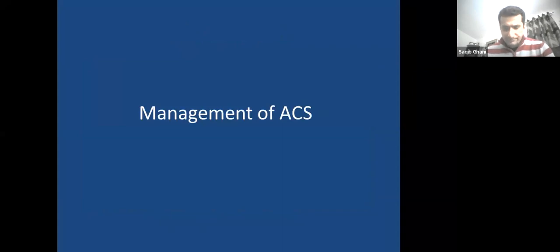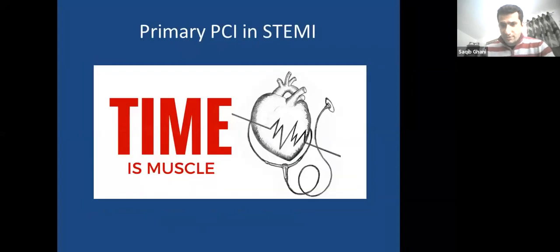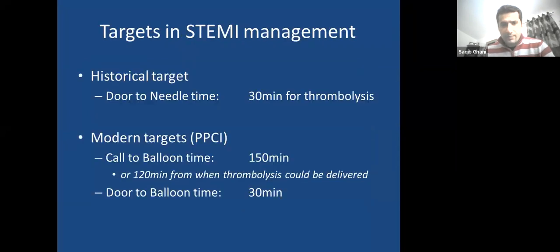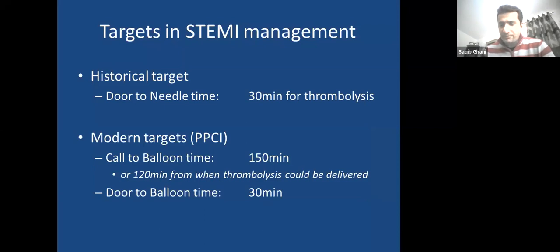Time is muscle. As soon as we identify STEMI, every minute is important — myocardium is being lost. In the UK, historical targets used thrombolysis with a door-to-needle time of 30 minutes. Modern targets relate to primary PCI: call-to-balloon time should be 150 minutes. The call time is when the patient seeks medical attention — whether presenting to A&E or calling an ambulance.